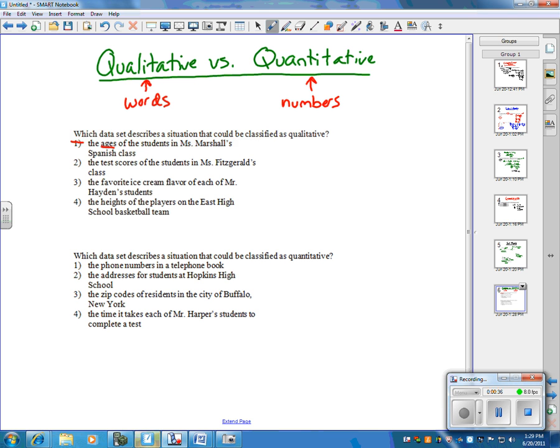Test scores would be quantitative, so it can't be two. And four, height, is another measurement, so four is out.